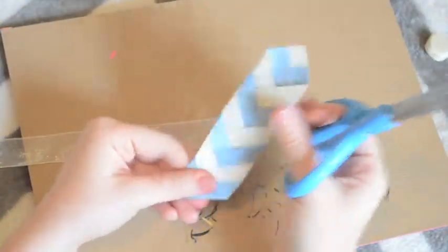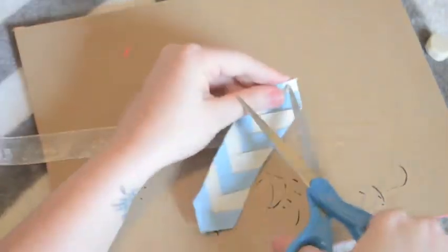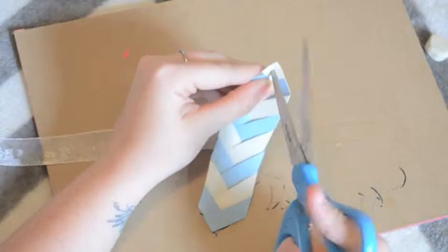This last step is optional, but if you want to add a ribbon to your bookmark, all you're going to do is puncture a hole at the top, thread it through, and then knot it at the top.